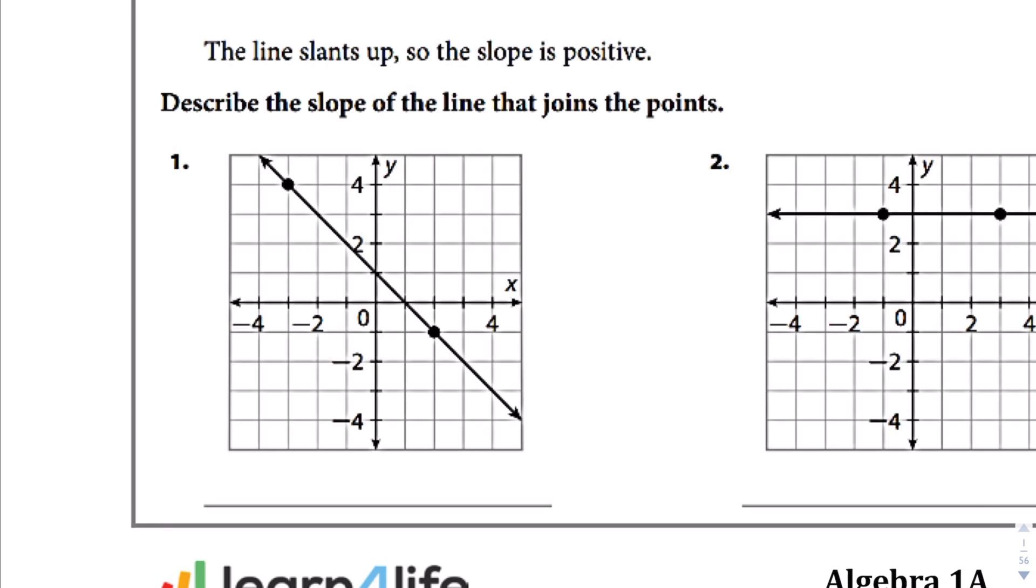So if we look at question number 1, we can see that from this starting point here, from left to right, we are generally trending down. So we're going to say that the slope is negative.